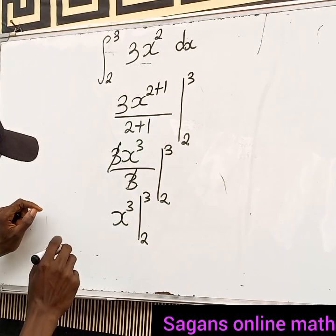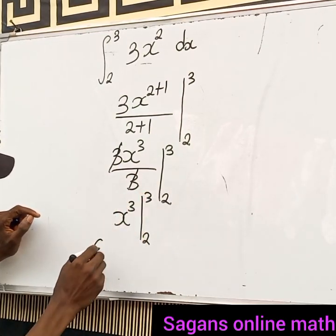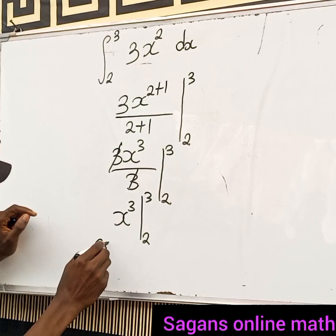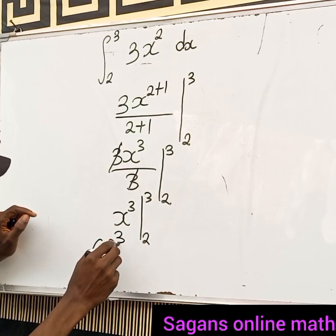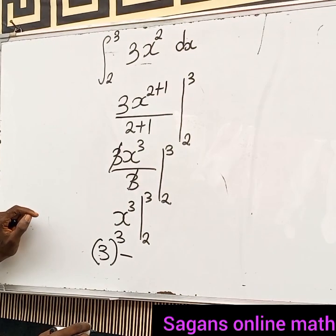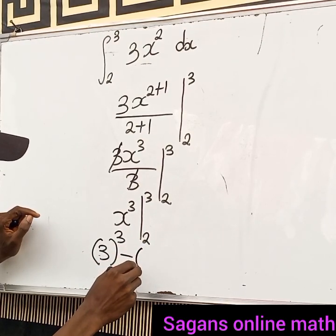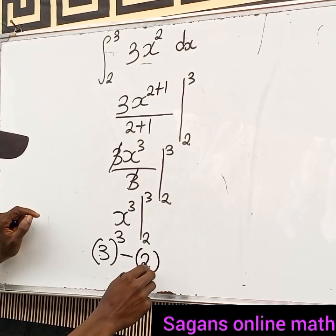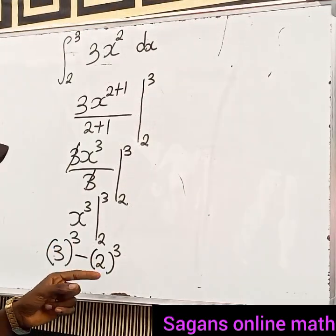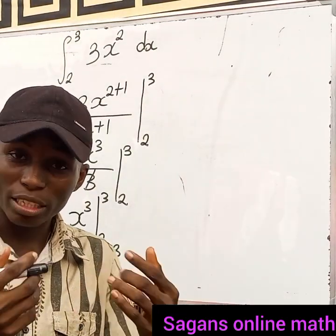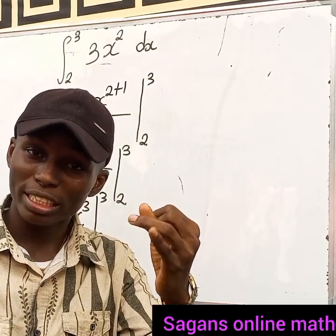Our upper limit is three, so we put in three in place of x, close the parenthesis, and raise to the power of three. Then minus our lower limit, which is two, also raised to the power of three.